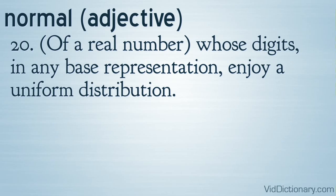Definition 20: Of a real number, whose digits, in any base representation, enjoy a uniform distribution.